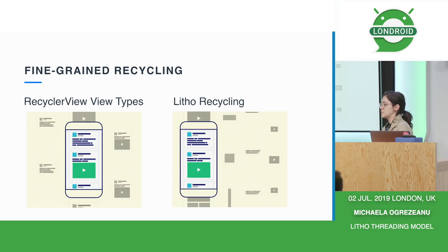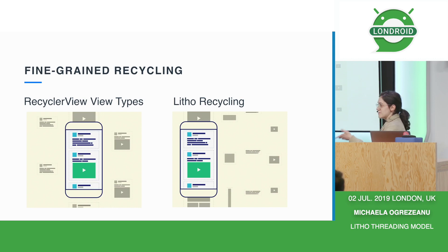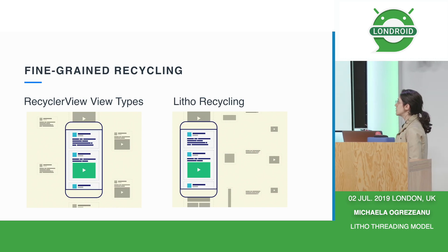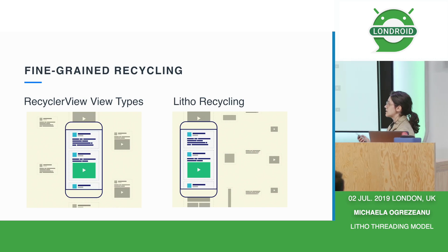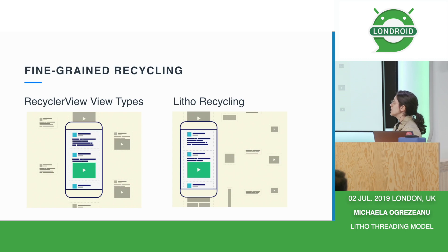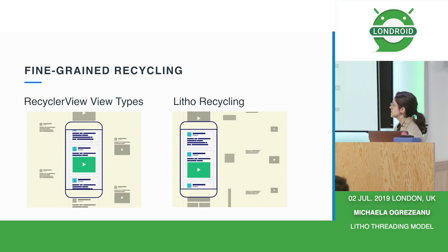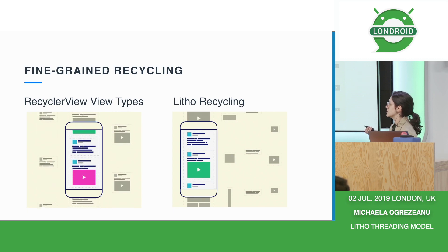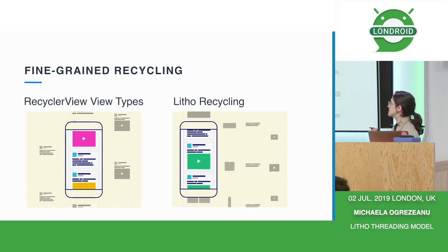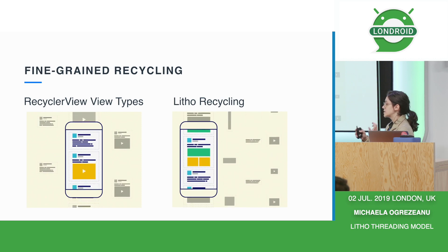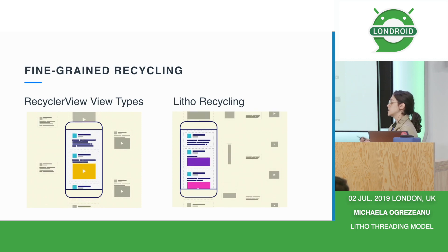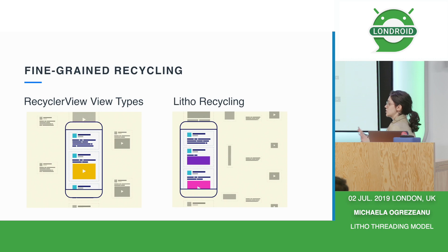Think about one of your friends gets married — you see a life event story. Chances are, as you start scrolling, you're not going to see another one in the lifetime of that RecyclerView. So what Litho does is, instead of recycling on the view type level, it recycles on the finest possible component that we can put on screen — on the text level, on the image level, on the finest component you can actually mount on screen.